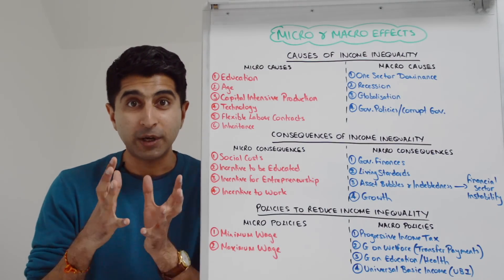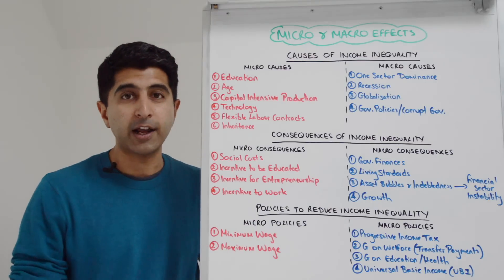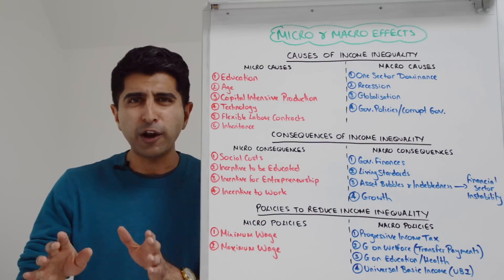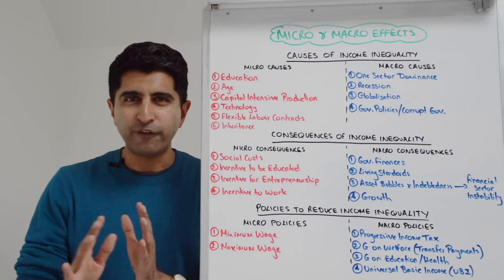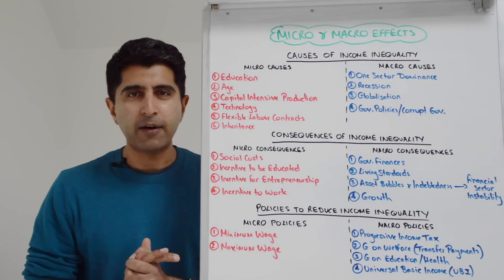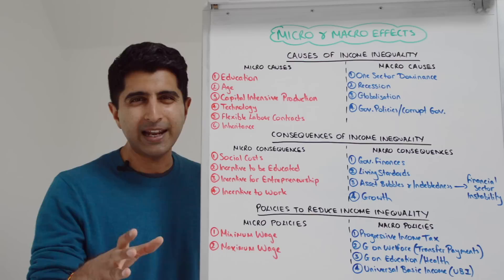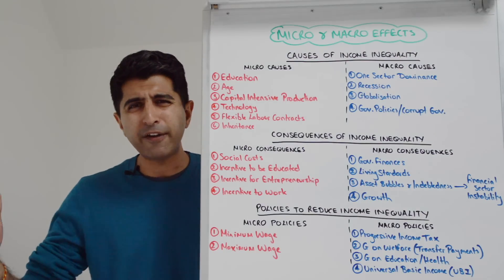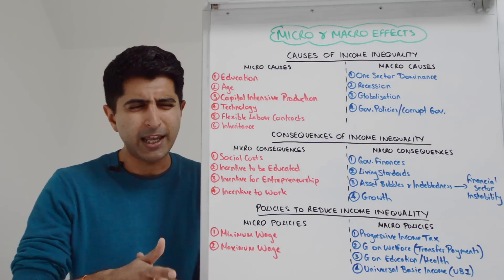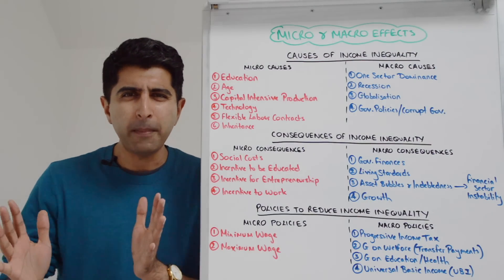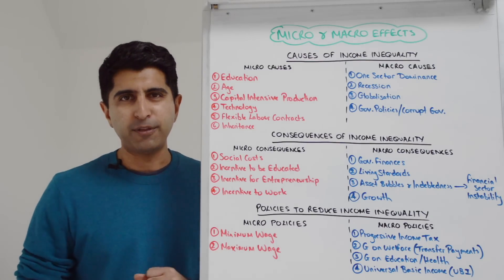Income inequality is a massive topic area and could easily be a feature of Paper 3 this year, so we need to prepare well. This video is very thorough in that regard. Note that this video is one of many where I look at micro and macro effects of various topic areas in the course.